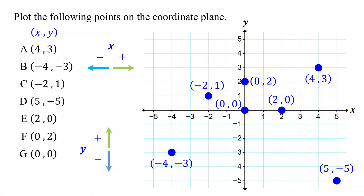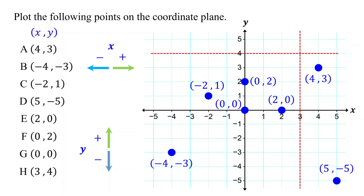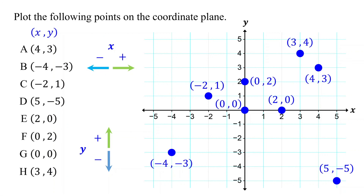By the way, there is also another way to plot points that you might find useful. Let's plot the point (3, 4) as an example. First, locate the x-coordinate on the x-axis and sketch a vertical line that passes through it. Then, locate the y-coordinate on the y-axis and sketch a horizontal line that passes through it. The intersection of these two lines is the point (3, 4). Note that these vertical and horizontal lines are just to help us find the point — they are not part of the final graph. If you find this method easier, feel free to re-plot the other points to practice.